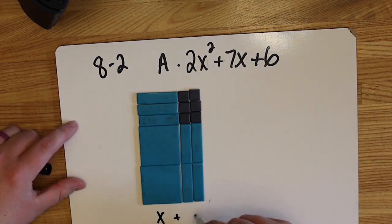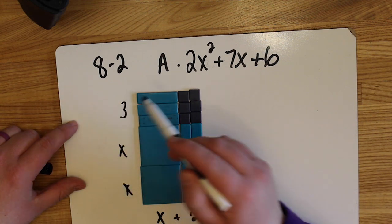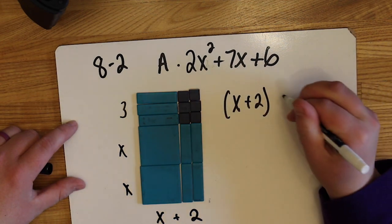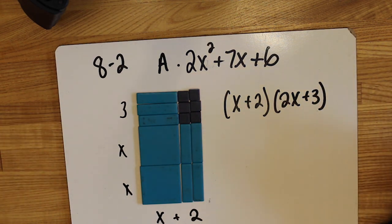So now I'm going to write the perimeter, which is the product of this sum. So it's going to be 2x plus 3 times x plus 2. And that's our product given the sum.